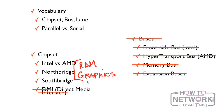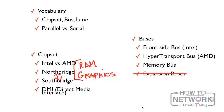We also talked about the South Bridge, which handles everything else other than RAM and graphics. And the DMI — Direct Media Interface — which connects the North Bridge and the South Bridge together. We talked about the front side bus, also called the hyper transport bus on AMD, and the memory bus, which communicates between the memory and the front side bus.